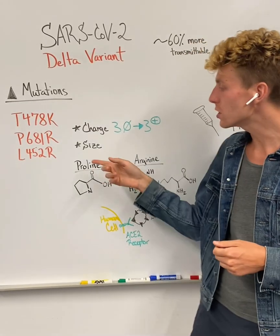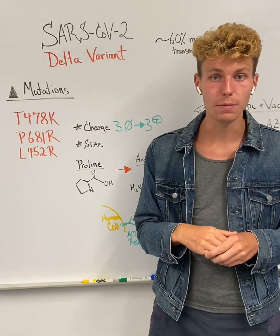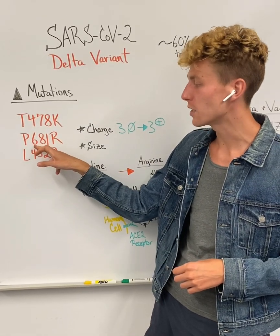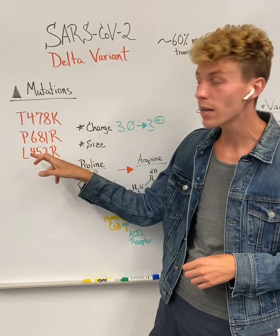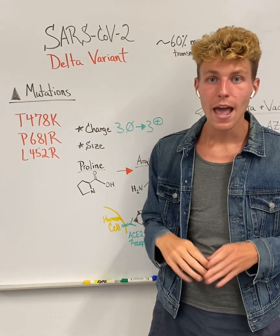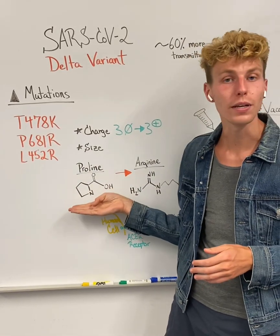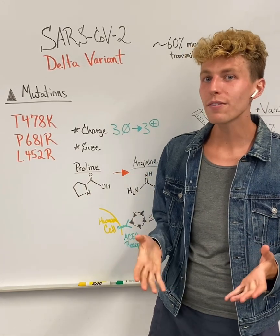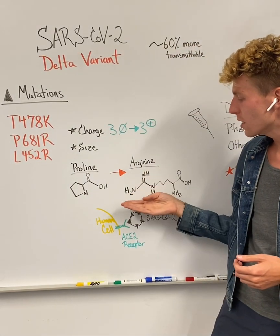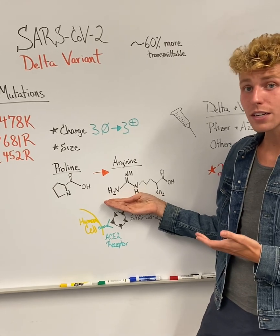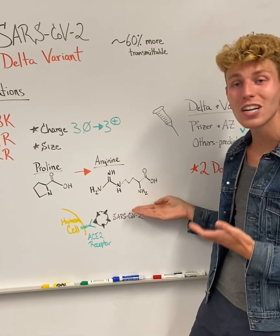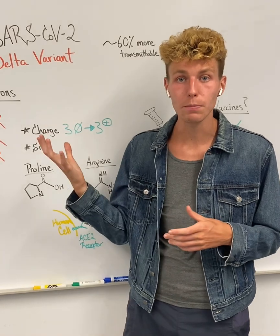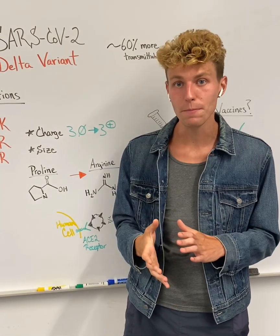Second is the size of the amino acids that are substituted. Most important is the proline at position 681 mutation to arginine. The chemical structure of proline is quite small; however, the mutation to arginine produces a much larger chemical structure. So that can also cause changes to the spike protein, affecting its final shape.